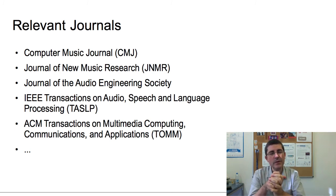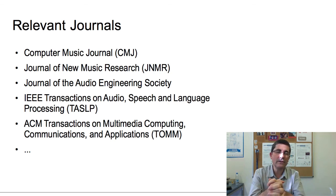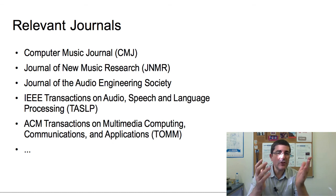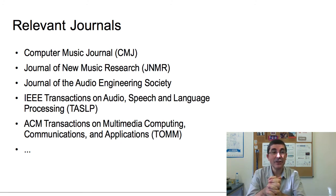The IEEE Society has quite a few journals, but one in particular — the Transactions on Audio, Speech, and Language Processing — always includes relevant articles. The ACM also has relevant journals; perhaps the most related to what we have been talking about is the Transactions on Multimedia Computing, Communications, and Applications. There are many other journals that might include relevant articles, and it's good to keep an eye on all these activities.